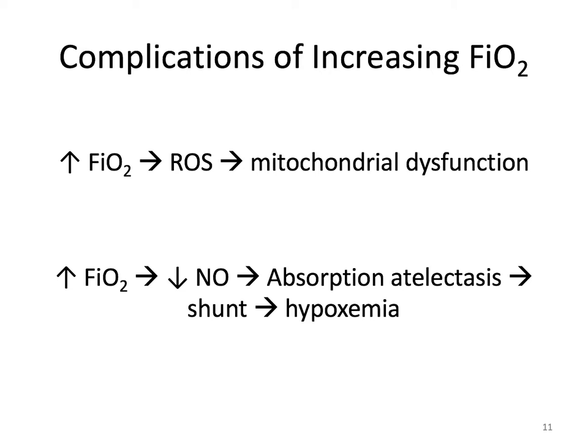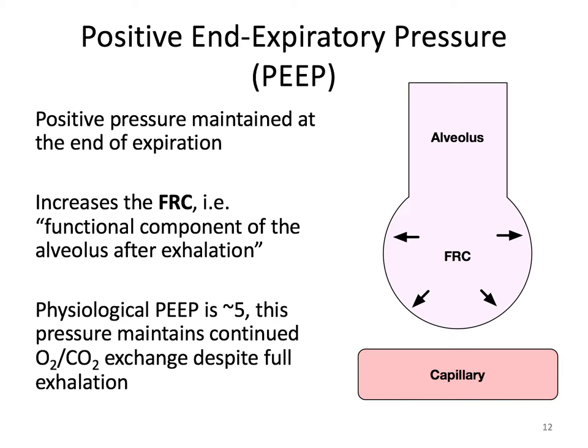Positive end expiratory pressure, or PEEP, is the positive pressure maintained at the end of expiration. This results in an increase in functional residual capacity — the functional component of the alveolus after exhalation. Increasing the FRC results in increased surface area, prevention of collapse, decreased intrapulmonary shunting, improved compliance, and improved oxygenation. The benefit is that a lower FiO2 is needed, reducing the risk of oxygen toxicity. The positive pressure associated with increasing FRC may also decrease transudation of fluids, such as with CHF, and increased compliance results in a decrease in work of breathing. Physiological PEEP is around 5, which is often what you set the ventilator to, and this pressure maintains continued oxygen and carbon dioxide exchange despite full exhalation.